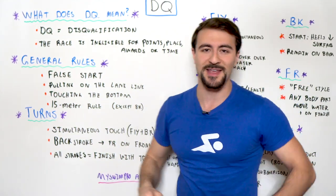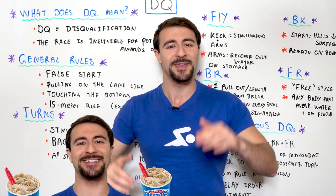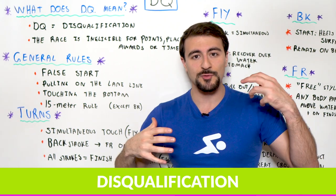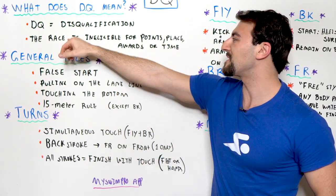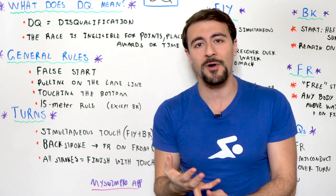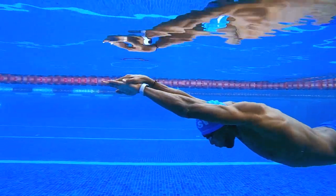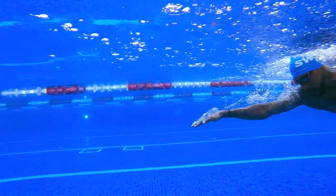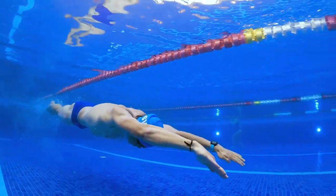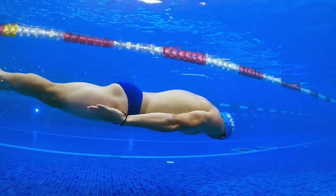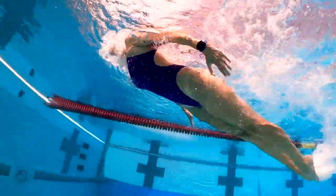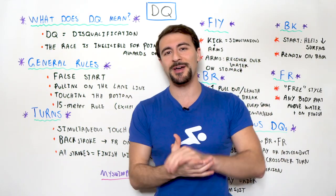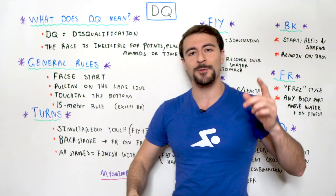First of all, what does DQ mean? DQ is short for disqualification. This means you go to a competition, you race, and that race is now ineligible for points, placing, awards, and most importantly for time. If you swim your race but you're disqualified — even if you have the best race of your life and qualify for junior nationals or the senior Olympics — that time does not count towards your best time or your PB, and that can be crushing.